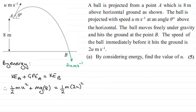So it didn't matter that we didn't know m, because it's in every term. So we can cancel out that m, divide through by m in other words. And tidying this up, we've got 8g here. We've got half u squared. And here we've got half of 4u squared. So that's going to be 2u squared. And if we subtract half u squared from that, we end up with 1 and a half u squared, or 3 over 2u squared.